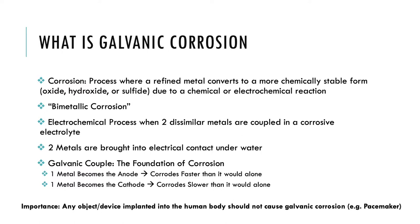Galvanic corrosion is a specific type of corrosion, also called bimetallic corrosion, because it is an electrochemical process when two dissimilar metals are coupled in a corrosive electrolyte. Two metals are brought into electrical contact underwater and a galvanic couple will form. One metal will become the anode and corrode faster than it would alone, and the other metal will become the cathode and corrode slower than it would alone.